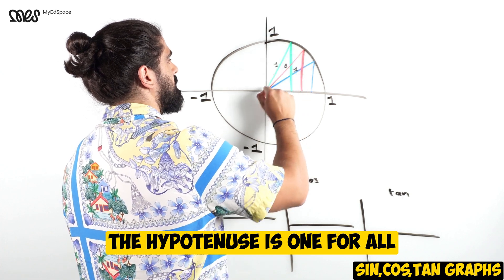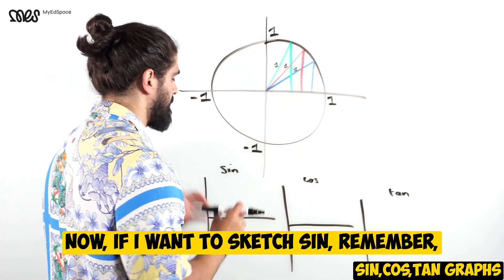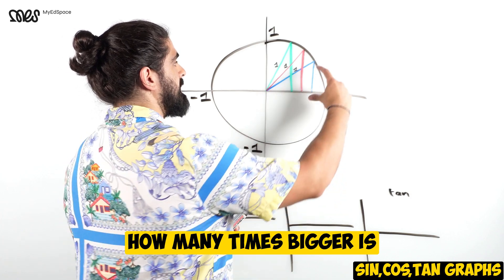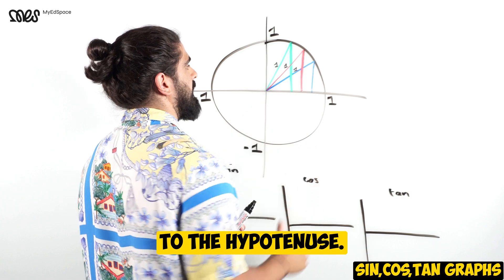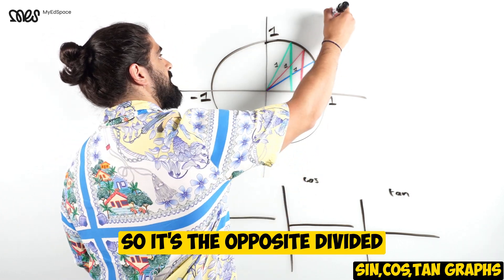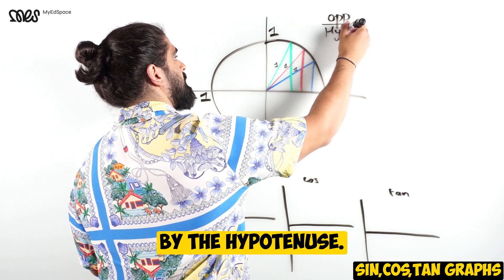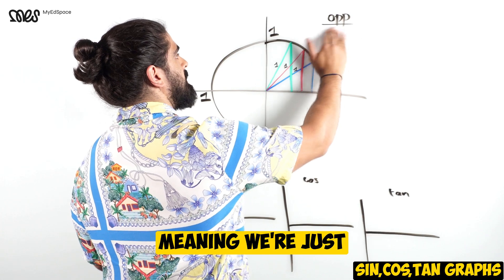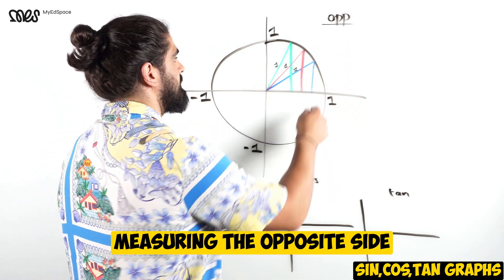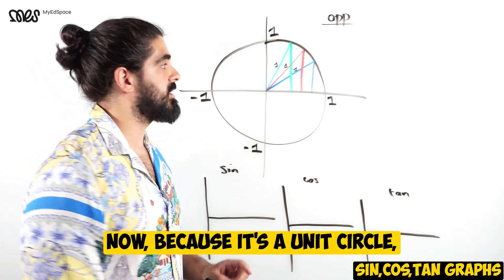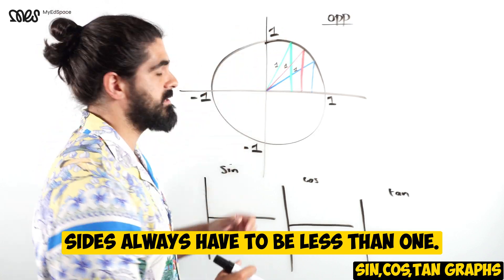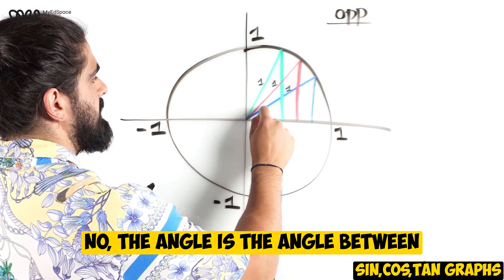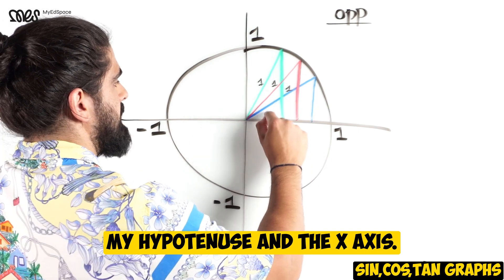If I want to sketch sine, remember SOH. Sine represents how many times bigger is the opposite side relative to the hypotenuse - opposite divided by the hypotenuse. But because we're talking about a unit circle, the hypotenuse is always one, meaning we're just measuring the opposite side in my circle. Because it's a unit circle, these opposite sides always have to be less than one.